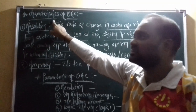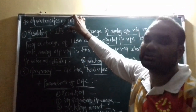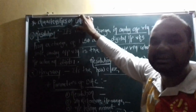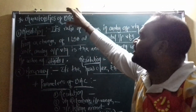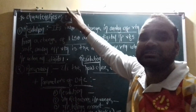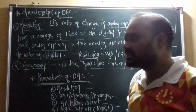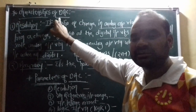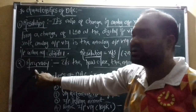Next point is the characteristics of DAC. DAC means digital to analog converter. Which characteristics have come in the lecture? There are two characteristics: resolution and accuracy.